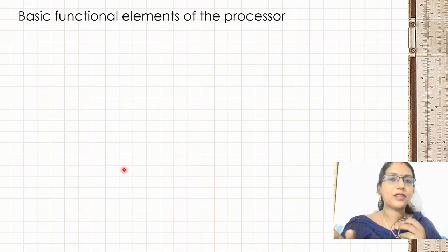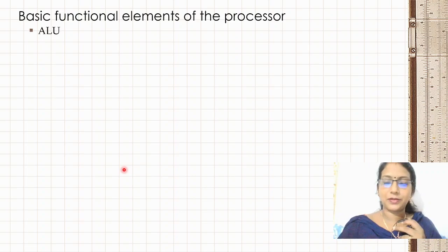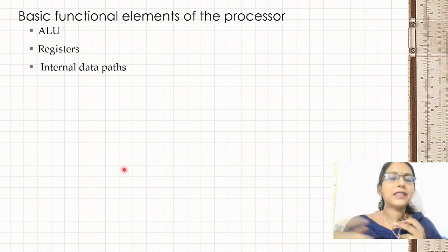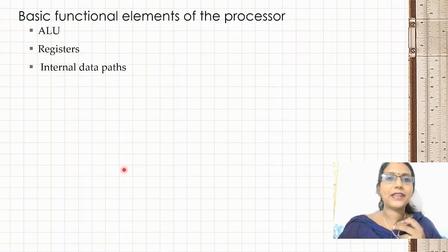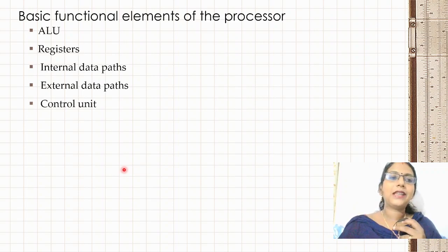The basic functional elements of the processor are: the ALU (Arithmetic and Logic Unit), which performs arithmetic and logical operations; registers, which provide fast internal storage; the internal data path, which is the data communication path between registers and the ALU; and the external data path, which is the external data bus connecting to memory and I/O devices. Finally, there is the control unit.